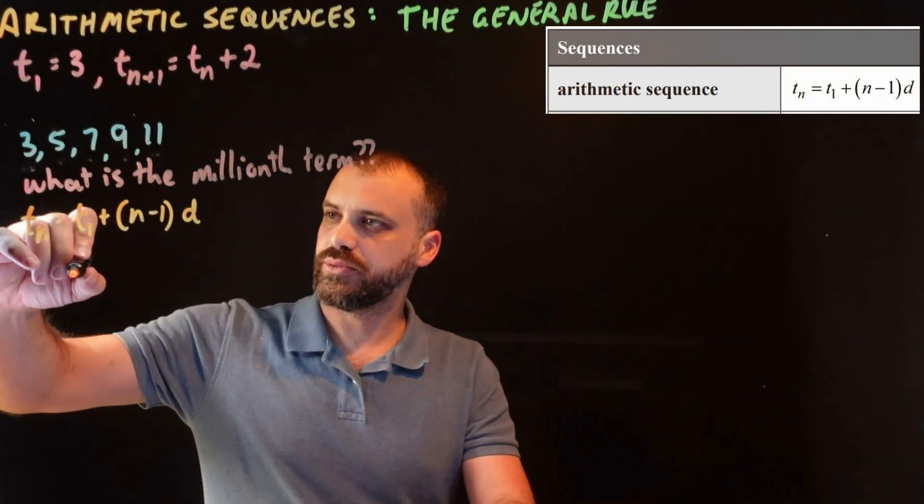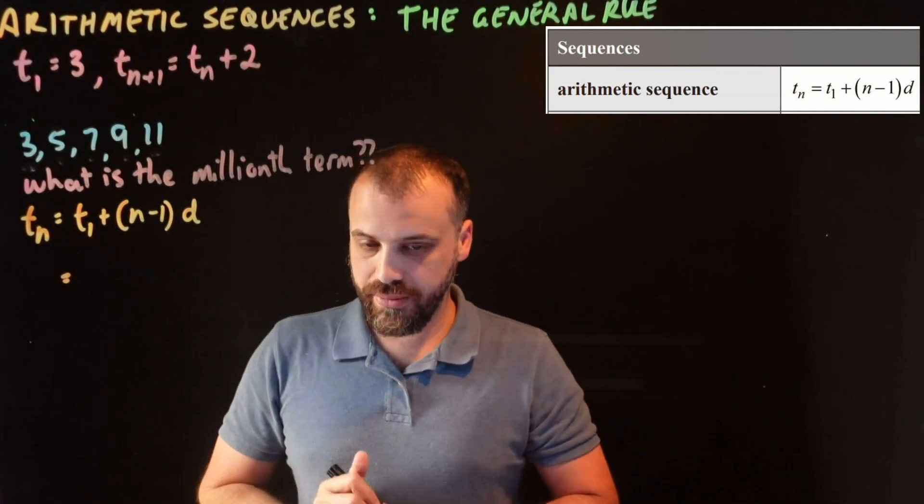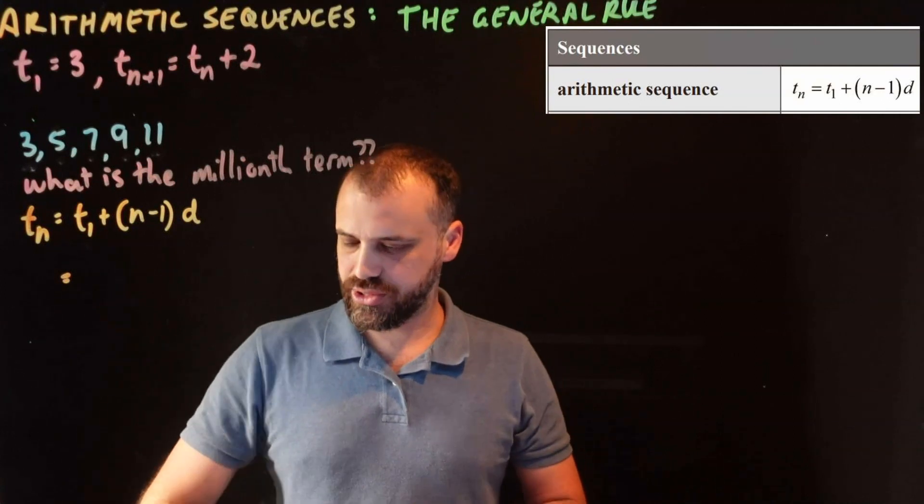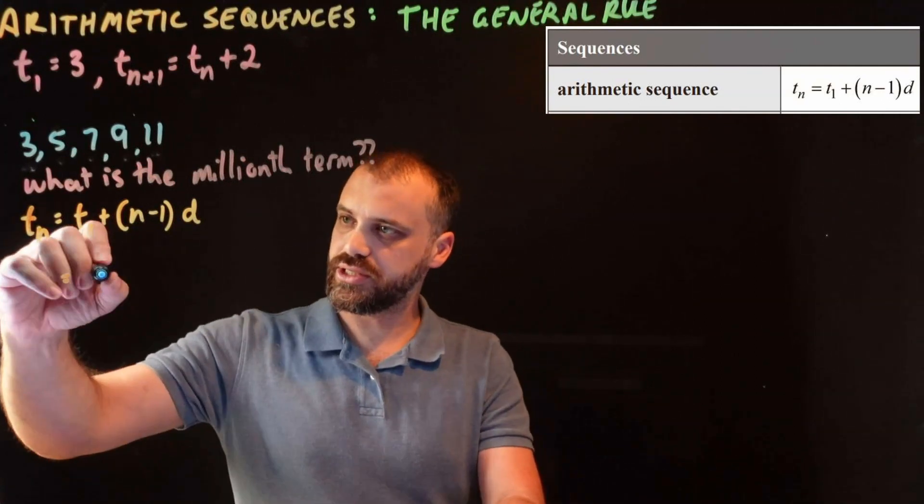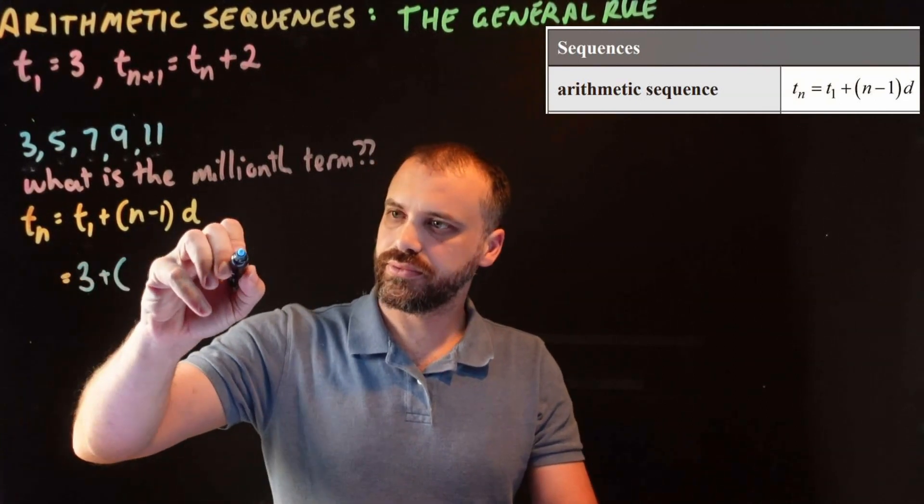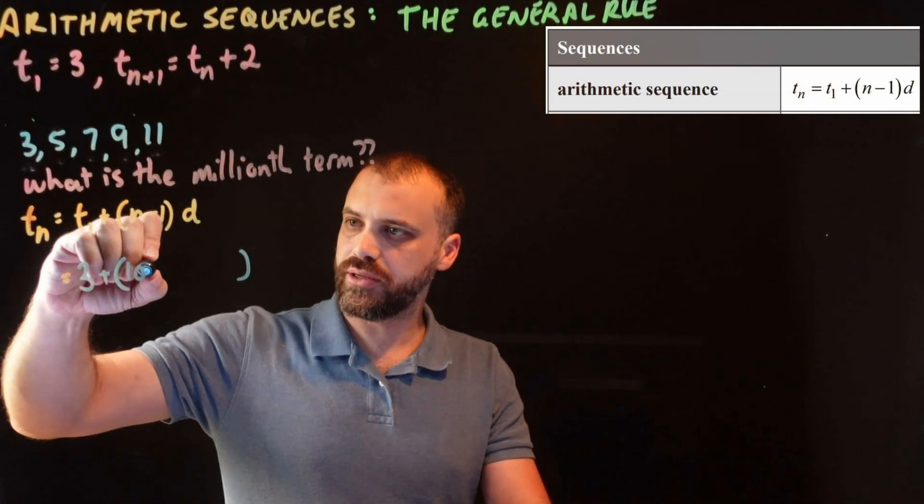Let's take a look. What's the millionth term of this sequence right here? Well, to find the millionth term, we put in our first term. So our first term here is 3, and then we add, what term did I want to know? I wanted to know the millionth term. 1 million.